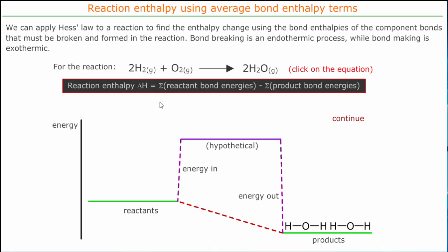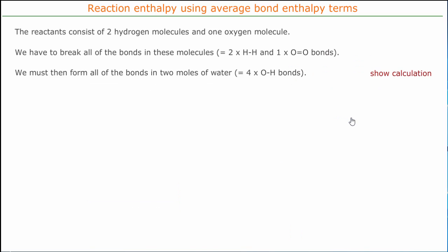Our reaction enthalpy will be the sum of the reactant bond energies — these are the ones that had to be broken apart, so it's an endothermic process — minus the sum of the product bond energies. Our reactants consist of two hydrogen molecules and one oxygen molecule, and we have to break all of the bonds in these molecules: that's two H-H bonds and one O=O bond.